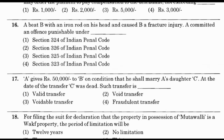Question number 16: A beats B with an iron rod on his head and causes B a fracture injury. A committed an offence punishable under — option 1: Section 324 IPC, option 2: Section 325 IPC, option 3: Section 325 IPC, option 4: Section 323 IPC. The answer is option 2 — Section 326 of the Indian Penal Code.